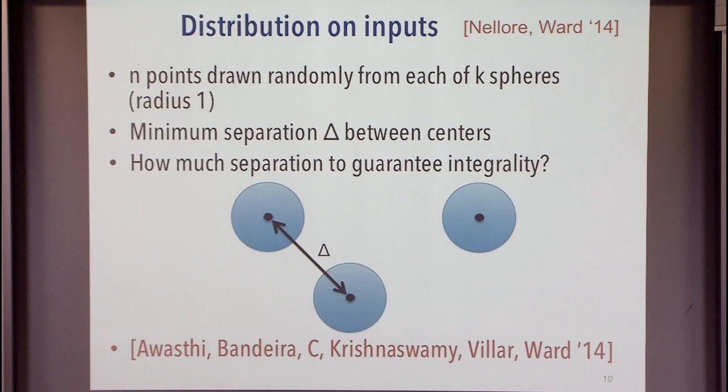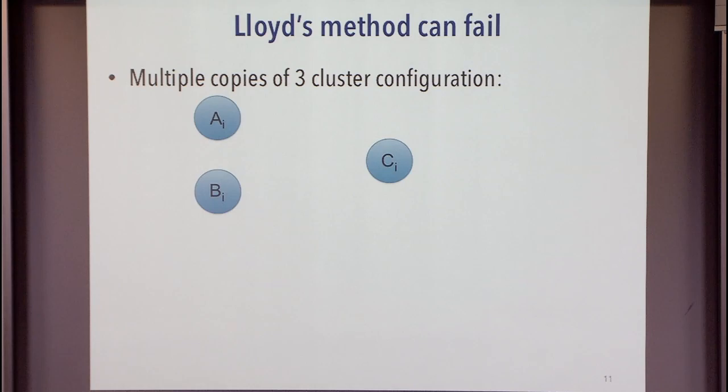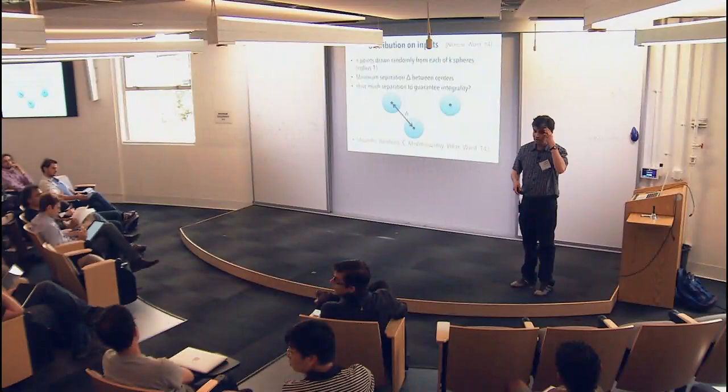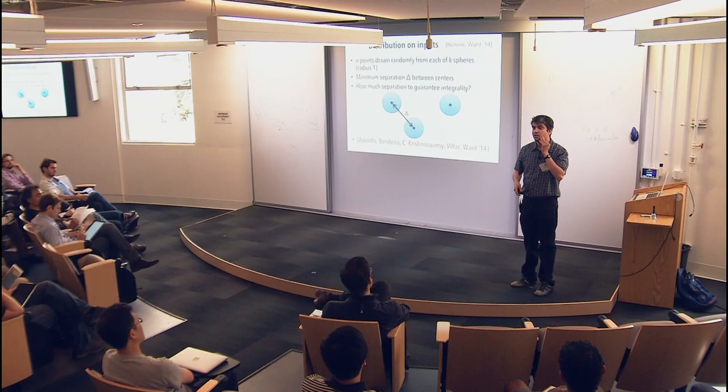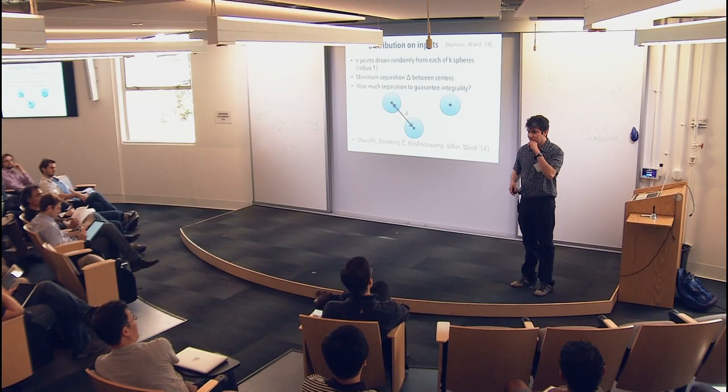This is joint work appearing at the upcoming ITCS. We looked at the same instance. If delta is bigger than 3 or 4, by distance alone, everybody in your cluster will be closer to you than everybody in another cluster — but we're going to try to look for separations smaller than that.